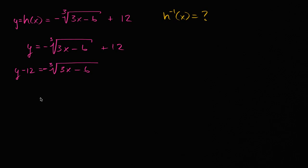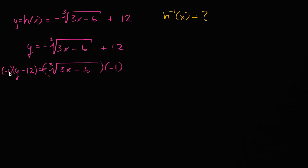Now what we could do is multiply both sides by negative one — that might just get rid of this negative here. So we multiply both sides by negative one. On the left-hand side, that's the same thing as 12 minus y, and on the right-hand side, we're going to get the cube root of three x minus six.